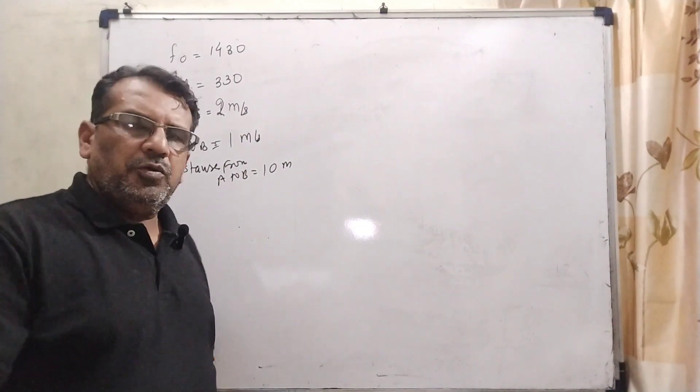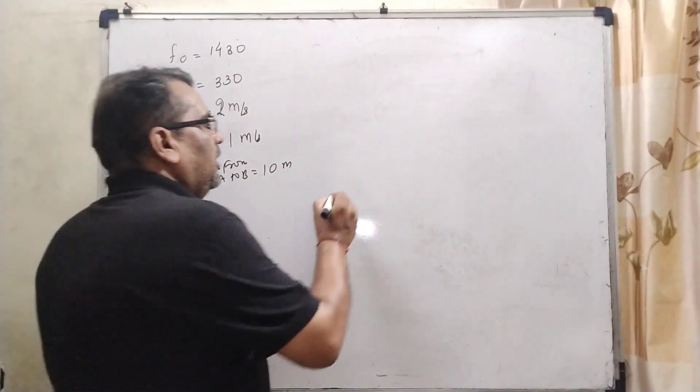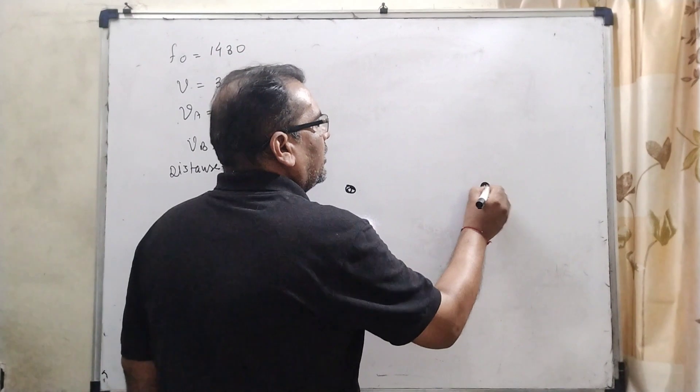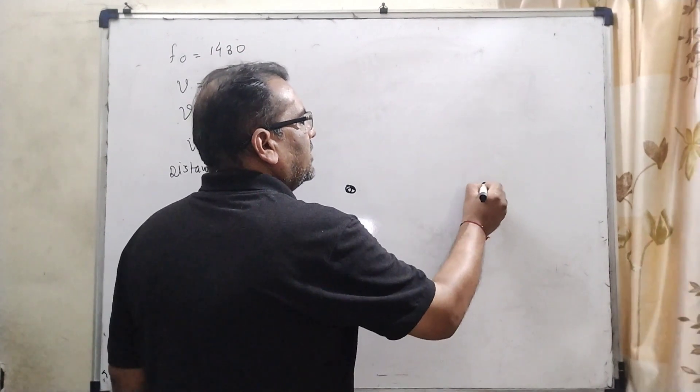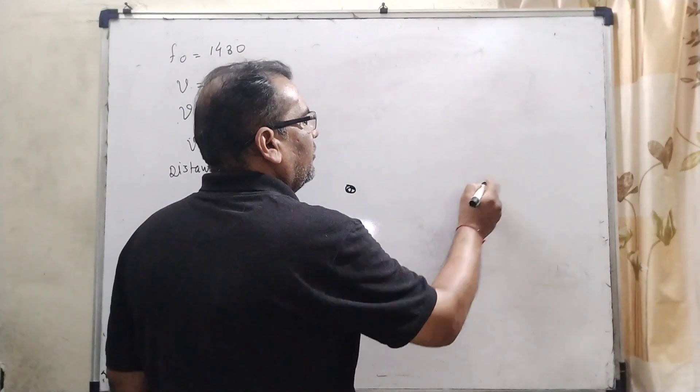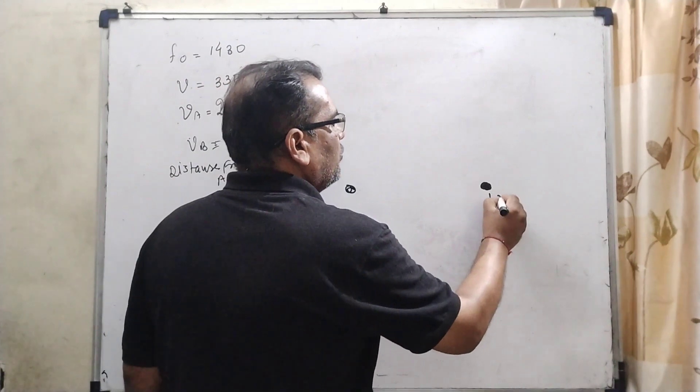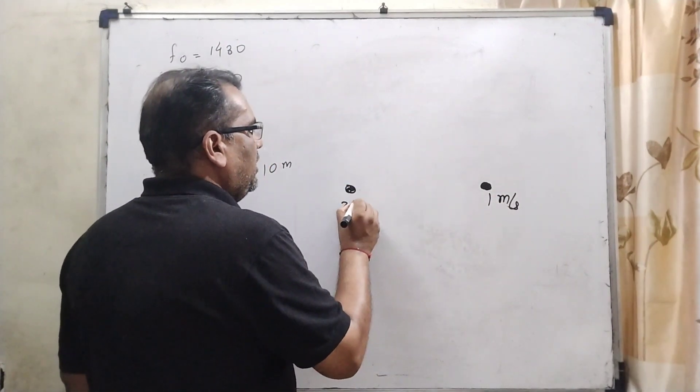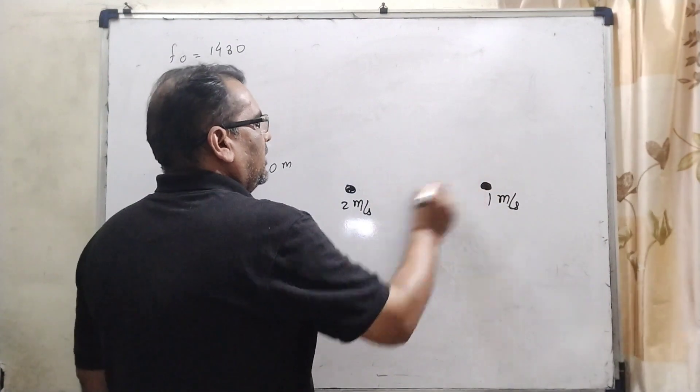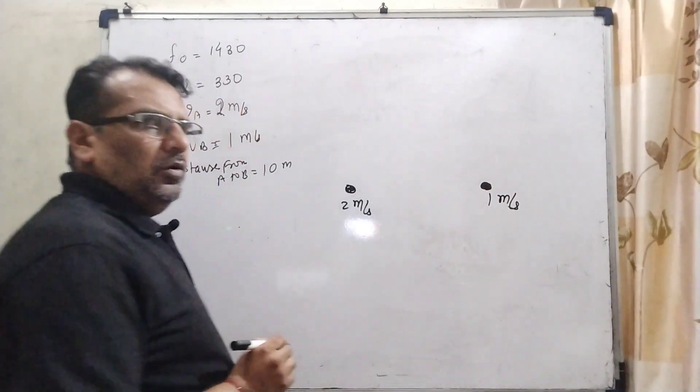Here, what the question says? There are two men walking one behind one. Let us consider that a first man has speed 1 meter per second and the other is 2 meter per second.